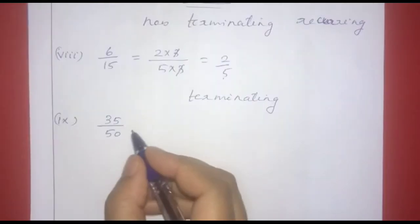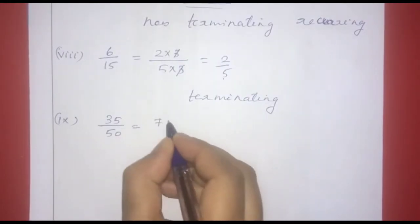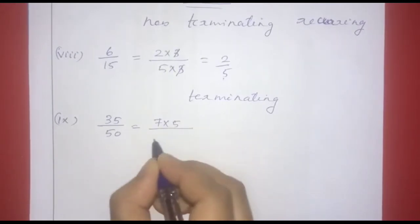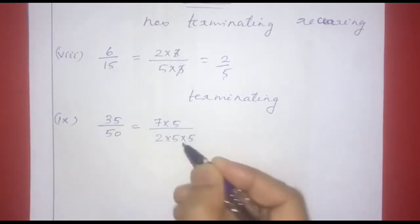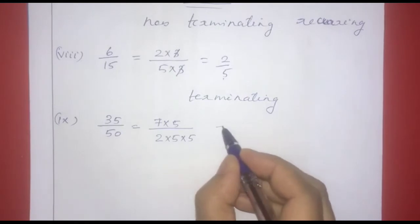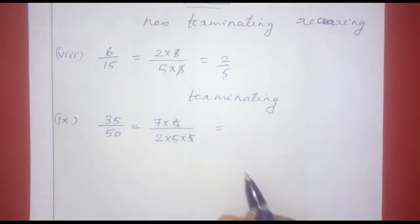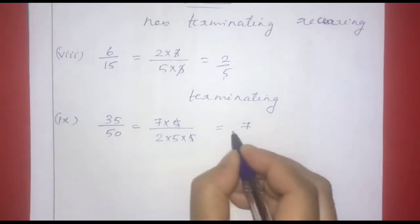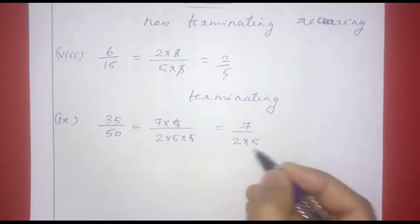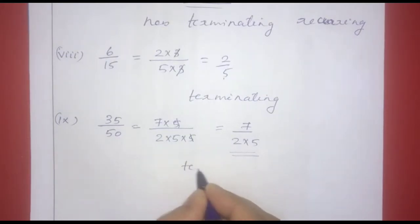Next one: 35 by 50. 35 is 7 into 5 and 50 is 2 into 5 into 5. After simplification, we get 7 by 2 into 5. The denominator is of the form 2 raised to n into 5 raised to m. Therefore, the decimal expansion is terminating.